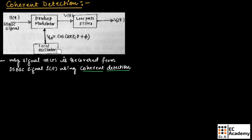If the local oscillator output is not synchronized with the carrier wave C of T used to generate the S of T signal, then there will be two errors: the first one is phase error and the second one is frequency error.